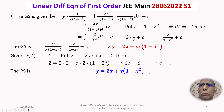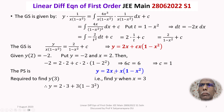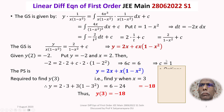Our question requires us to find y at x = 3. Substituting x = 3 into the particular solution: y = 2(3) + 3(1 - 3²) = 6 + 3(1 - 9) = 6 + 3(-8) = 6 - 24 = -18. Thus y(3) = -18, which corresponds to option A.